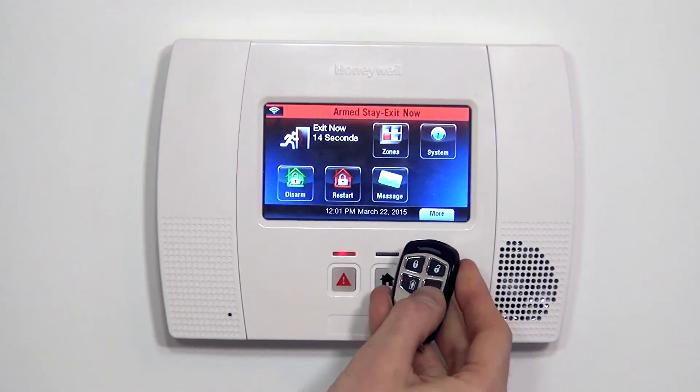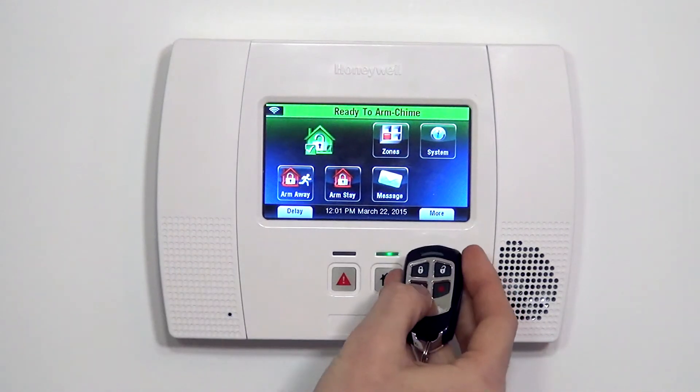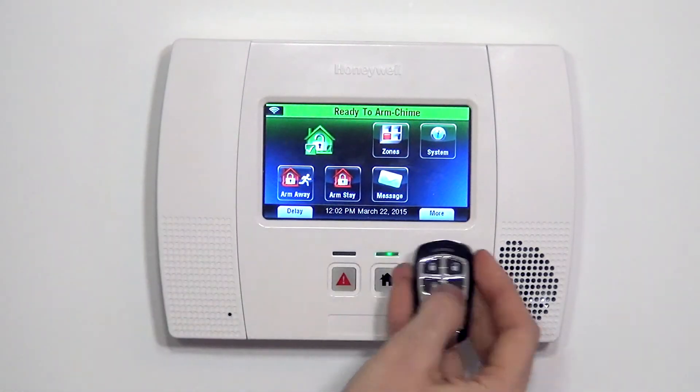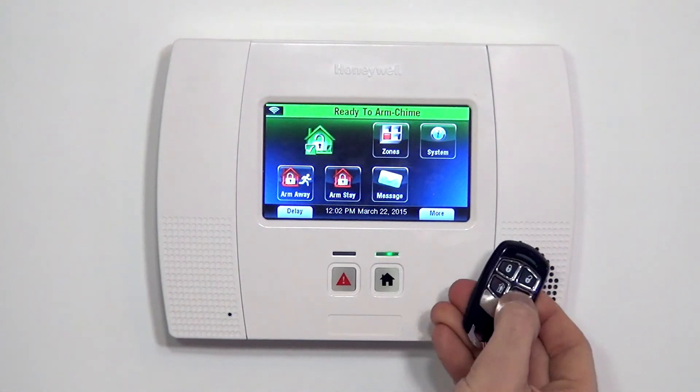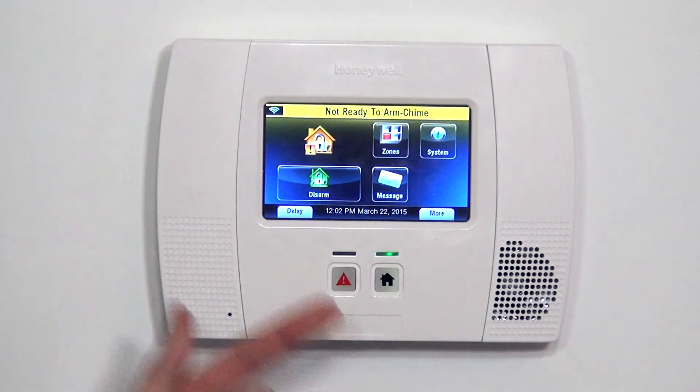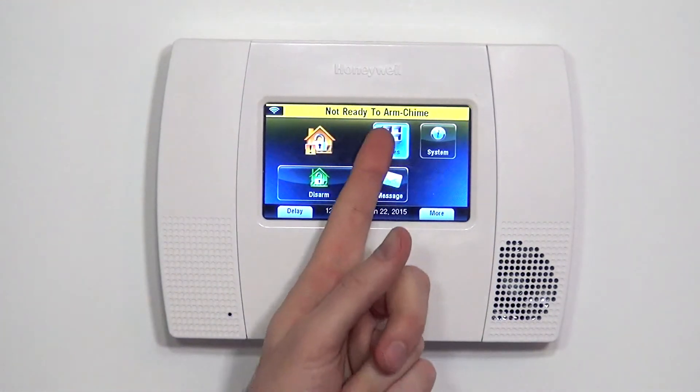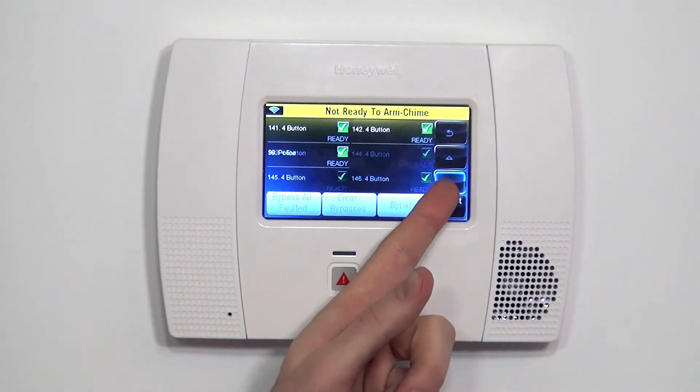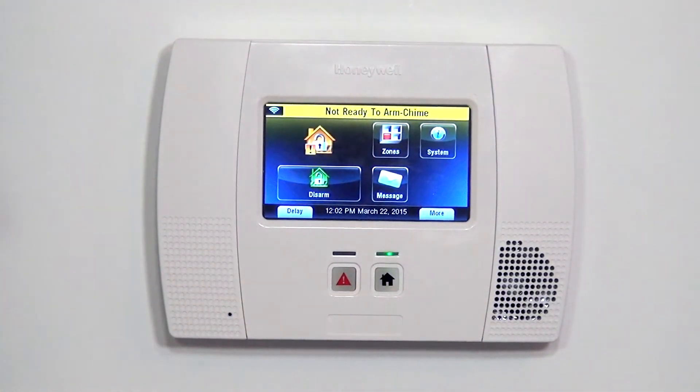Again, we can disarm or I want to show you the key, the silent alert. So we're going to disarm. Armed stay. Armed. Ready to arm. So we're going to disarm and then now we're going to show you that silent panic alarm. So if we press and hold, you can see it doesn't do any alarm activation audible, but it does show not ready to arm, indicating that the silent alert was triggered and sent through to the central station.